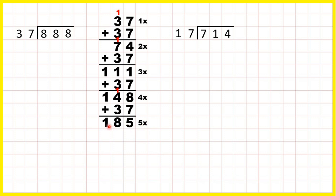We can see that 185 ends in a 5. Now we could keep going with working out our 37 times table, but it's a good idea to stop here and look at the question, because you might not need anything above 5 times. For these questions we just need to work out our times tables up to 5 times, and then we can use the long division method to find our answer.